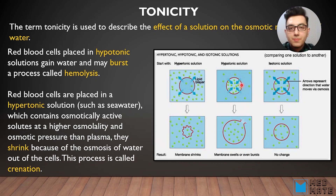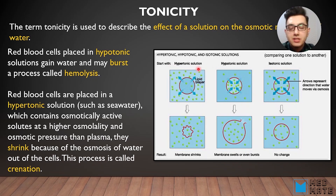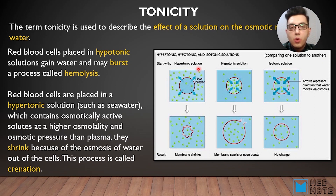Placing a red blood cell into a hypertonic solution — where there is a higher concentration of molecules outside — causes water from inside the red blood cell to move out into that solution. The red blood cell's volume decreases; it shrinks and gets smaller. This process is called crenation.